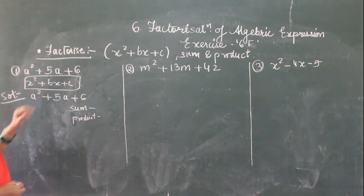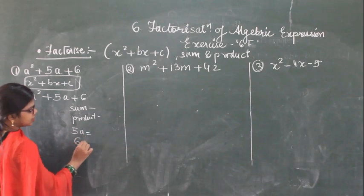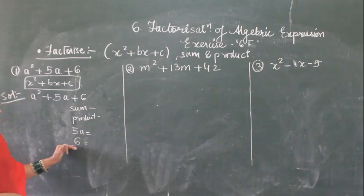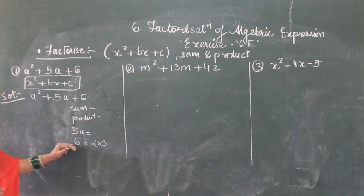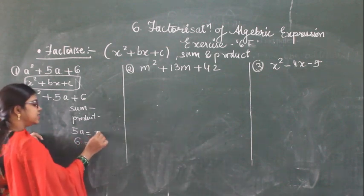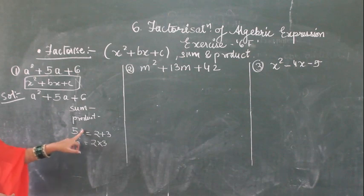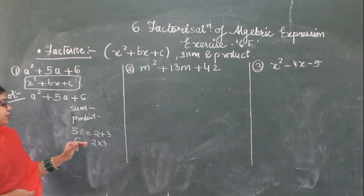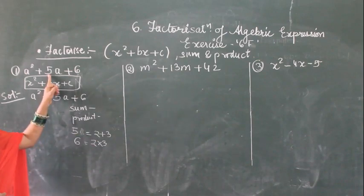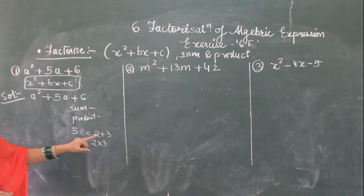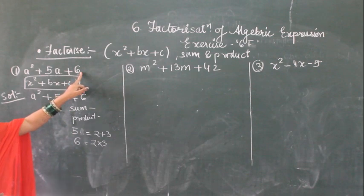See the middle term first: 5a. And the product is given as 6. So what will you multiply to get 6? If I multiply 2 into 3, so 2 threes are 6. And similarly if I add 2 plus 3, I will get 5. So we have to choose such numbers that the product equals the last term and the sum equals the middle term.